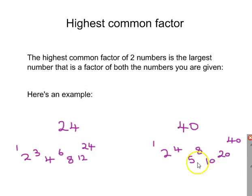These are all the numbers that have 40 in their times table. And then I look through both lists of factors to see which numbers are in both lists. So that would be 1, 2, 4, and 8. And the highest common factor is the biggest number that's in both lists - 8.